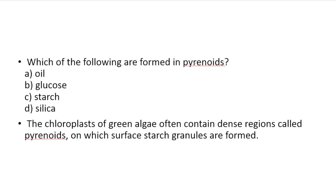Which of the following are formed in pyrenoids? Option A: Oil, Option B: Glucose, Option C: Starch, Option D: Silica. Answer: Starch. The chloroplast of green algae often contains dense regions called pyrenoids, on whose surface starch granules are formed.